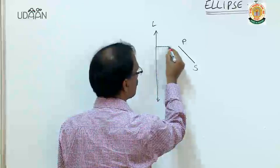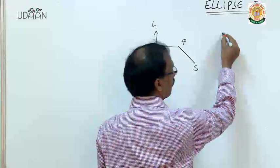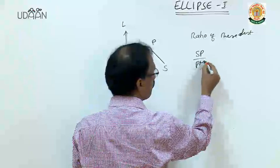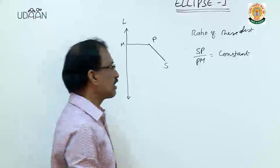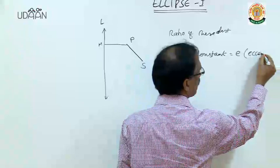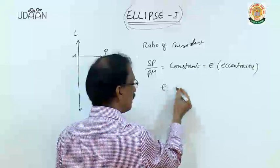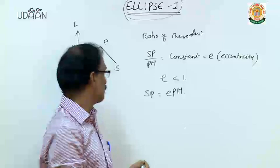Point P is moving such that the distances PS and PM are considered. We have PS and PM. Now the ratio of these distances, that is SP by PM, if SP by PM equals a constant, we define this constant as E, or eccentricity. To get an ellipse, this E is less than 1. So SP equals E times PM.